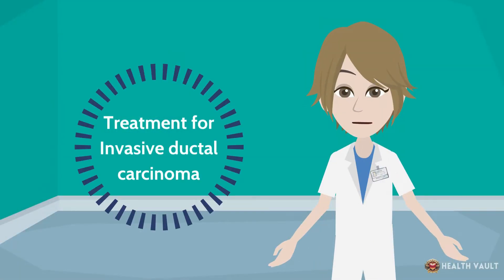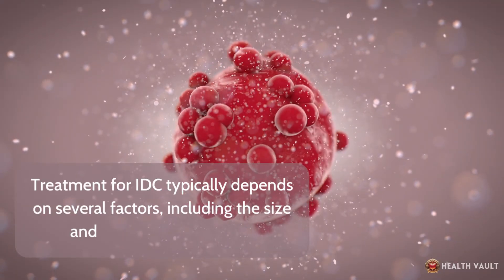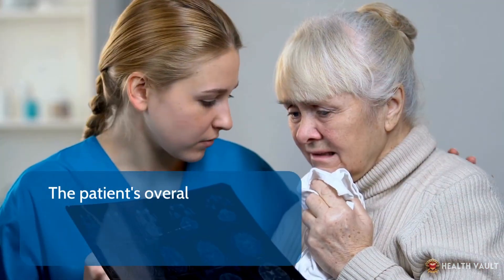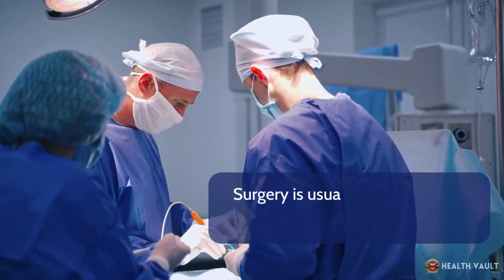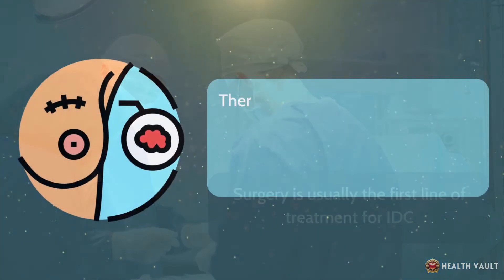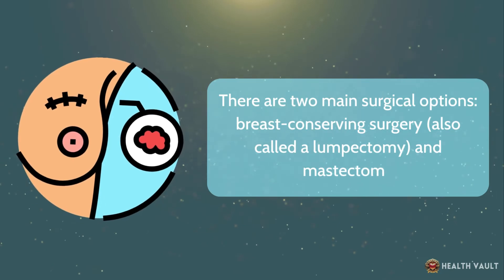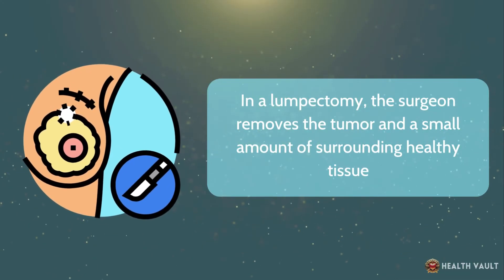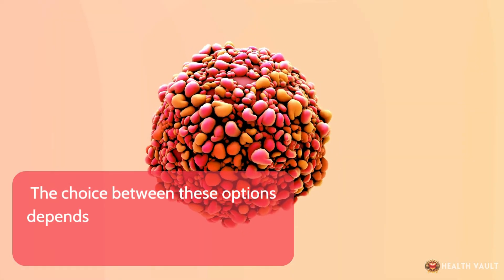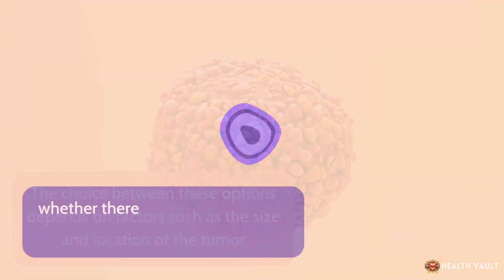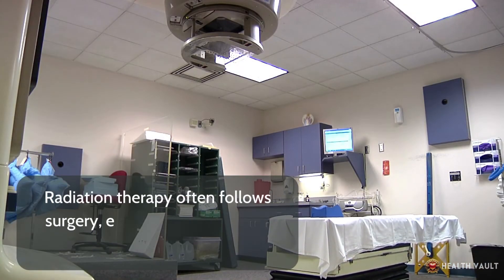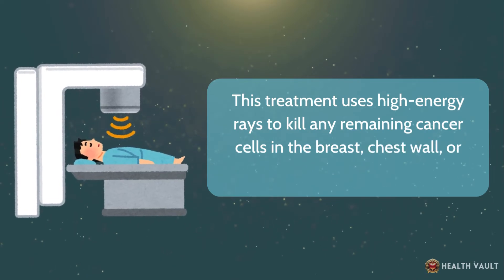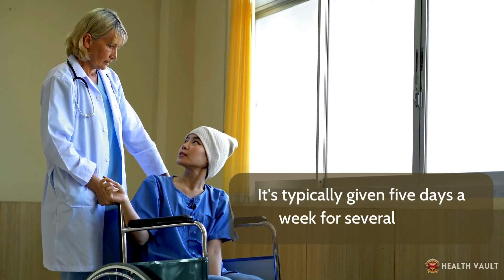Treatment for IDC typically depends on several factors, including the size and location of the tumor, the grade of the cancer cells, whether the cancer cells have receptors for hormones or HER2, and the patient's overall health and personal preferences. Surgery is usually the first line of treatment. There are two main surgical options: a lumpectomy, where the surgeon removes the tumor and a small amount of surrounding healthy tissue, and a mastectomy, which involves removing the entire breast. Radiation therapy often follows surgery, especially after breast conserving surgery, using high energy rays to kill any remaining cancer cells in the breast, chest wall, or underarm area, typically given five days a week for several weeks.